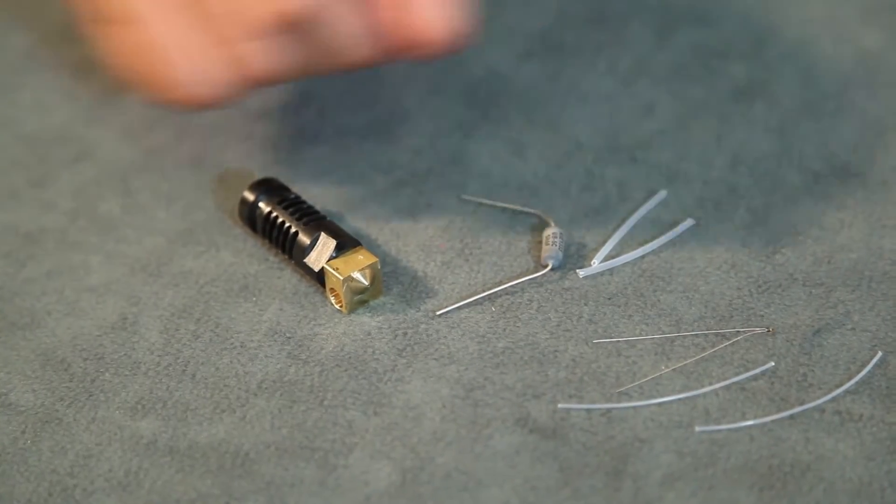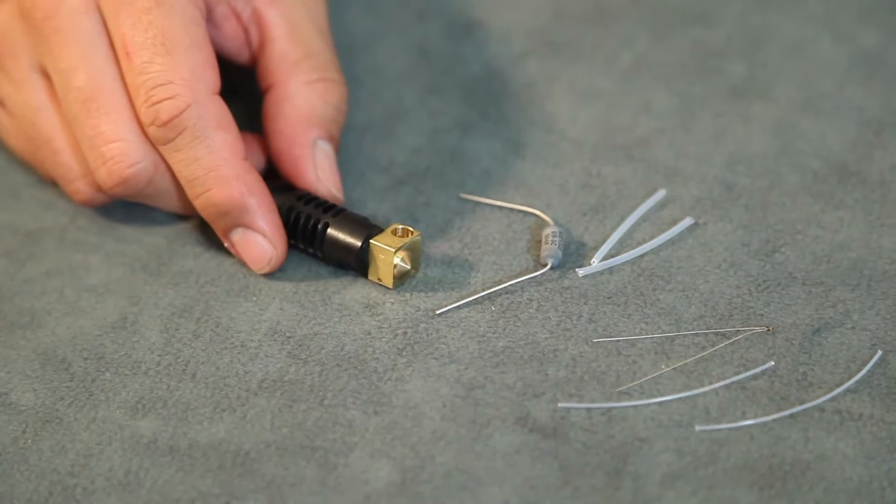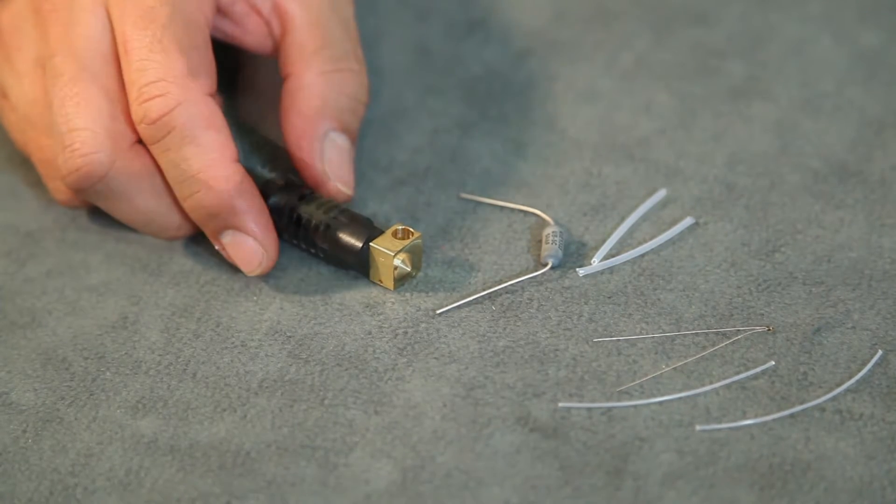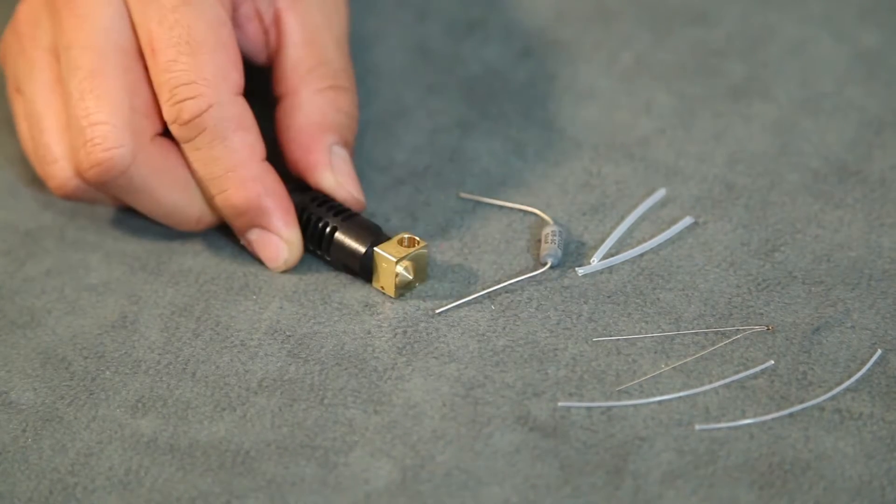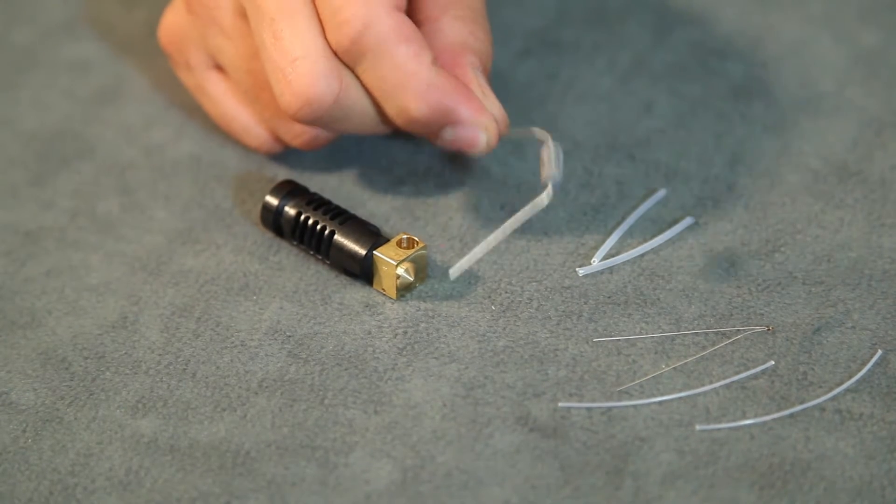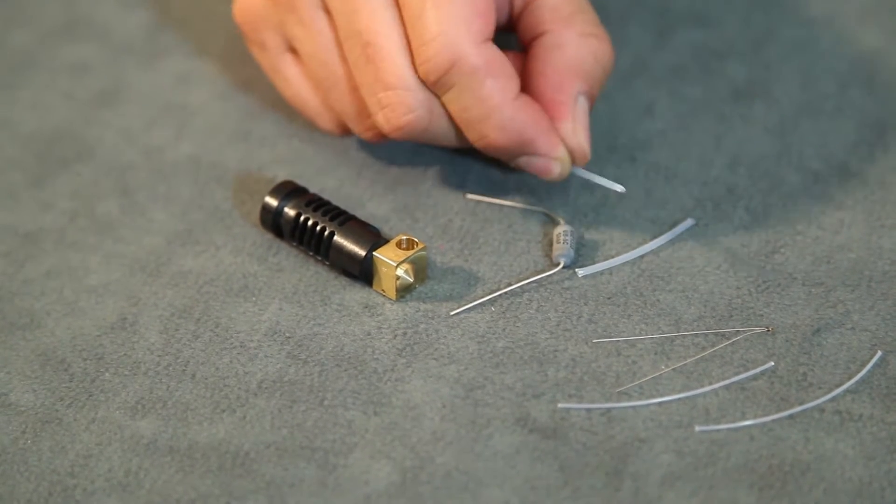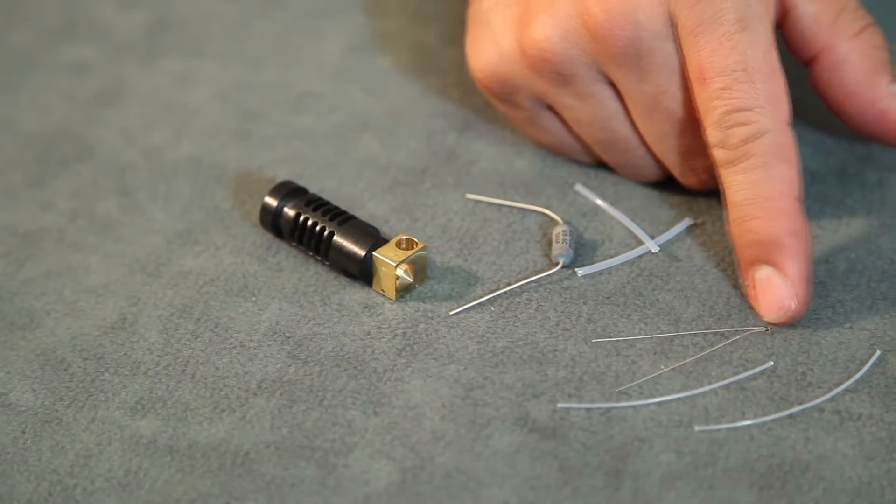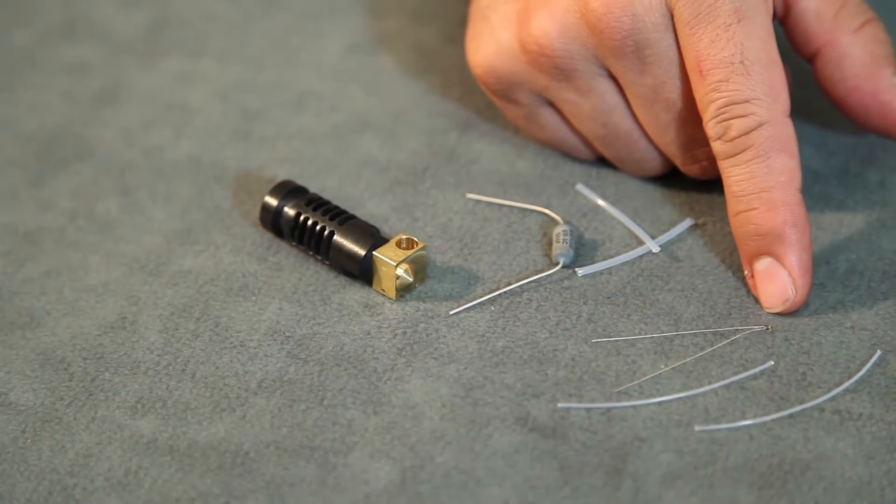Now we're going to put together the heating element of the extruder parts, which consists of the printhead, the heating element with the plastic sleeves that go to the heating element, and the thermistor with the plastic sleeves that go over those wires as well.